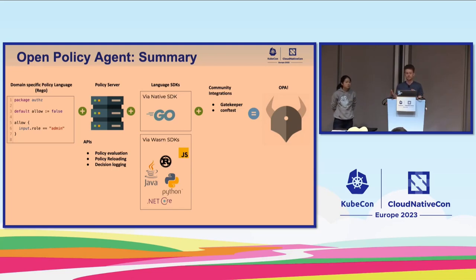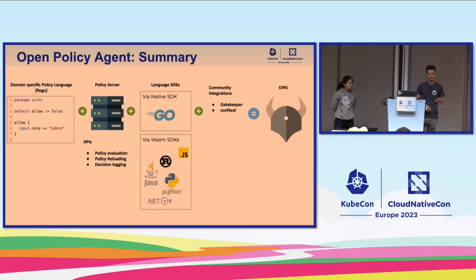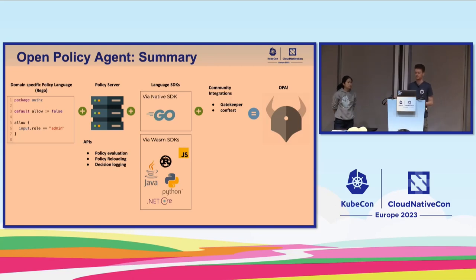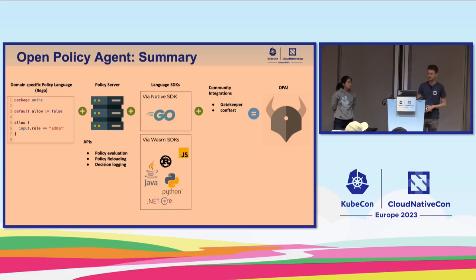You bring that in combination with a policy server. A policy server is able to evaluate this Rego language and make policy decisions for you, in addition to reloading of policy and logging of policy decisions. Couple that with some language SDKs — we have a native SDK for Go, which is how some of our community integrations are built, for example Gatekeeper and ConfTest, and a number of other SDKs based on WebAssembly for different programming languages.